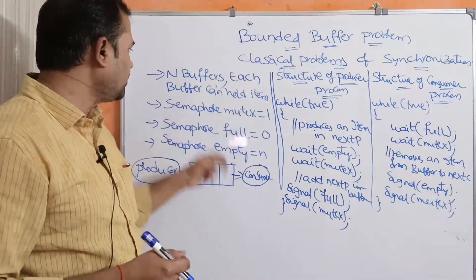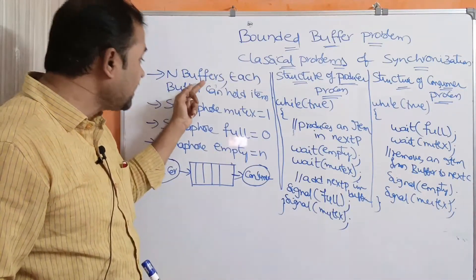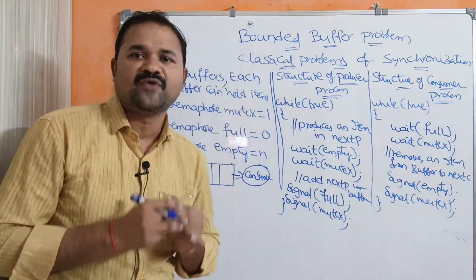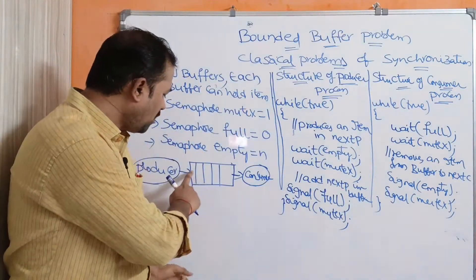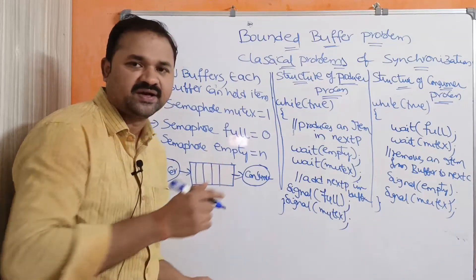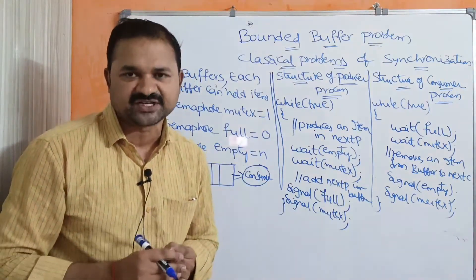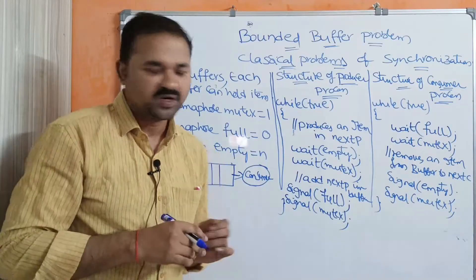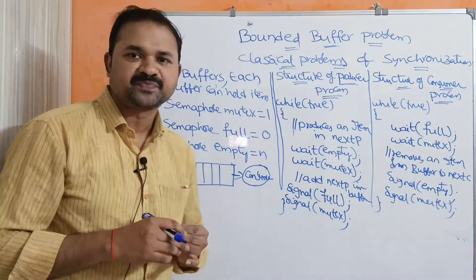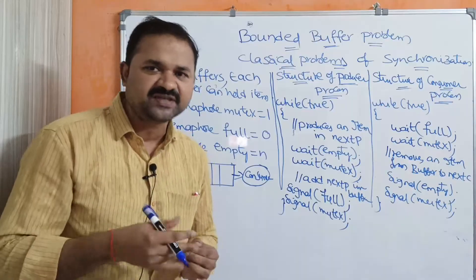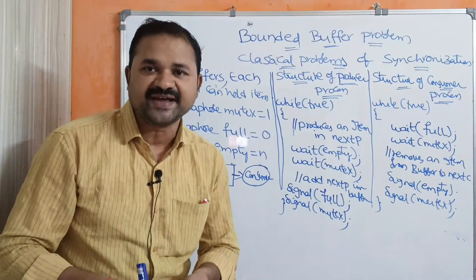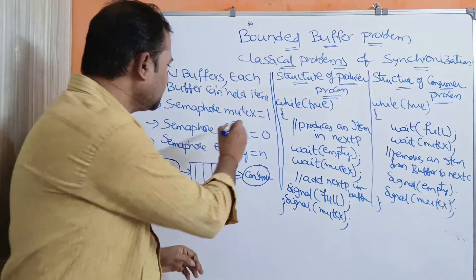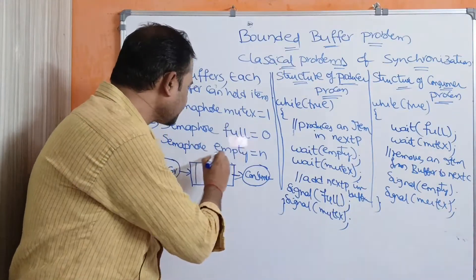Let us see this problem. Let we have n buffers where each buffer can hold one item. Here we have 5 buffers, and each buffer can store one item. With the help of 5 buffers we can store 5 items. Next we have 3 semaphores: mutex, full, and empty.